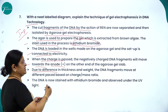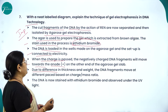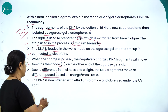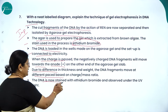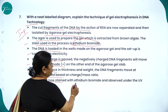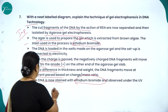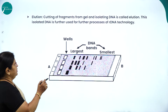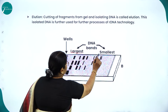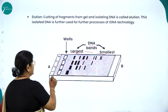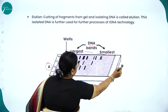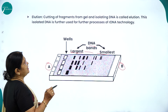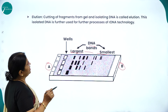Due to differences in thickness and weight, DNA fragments move at different rates based on charge-to-mass ratio. The DNA is stained with ethidium bromide and observed under UV light — you can see the largest and smallest DNA bands. Cutting fragments from the gel and isolating DNA is called elution; this isolated DNA is used for further recombinant DNA technology processes.